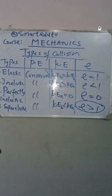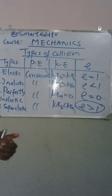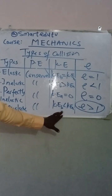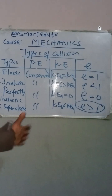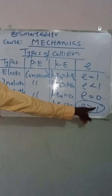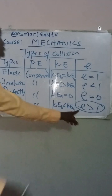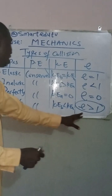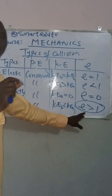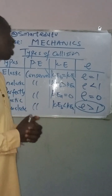For the last type of collision, we have super-elastic collision. For super-elastic collision: potential energy is also conserved, kinetic energy before the collision is less than the kinetic energy after the collision, and the coefficient of restitution E is greater than 1. This is a special case that only occurs in the event of a bomb blast. That is the only scenario where the coefficient of restitution E is greater than 1.